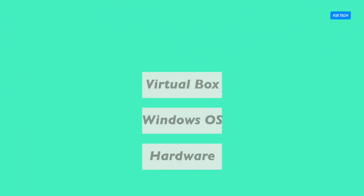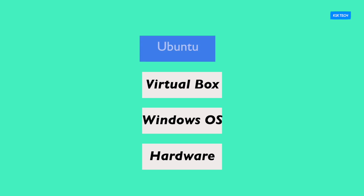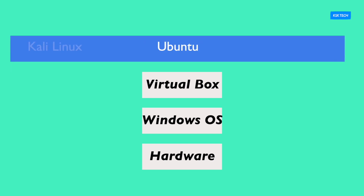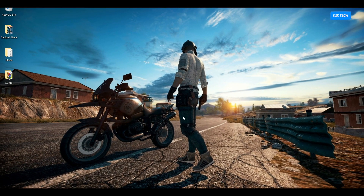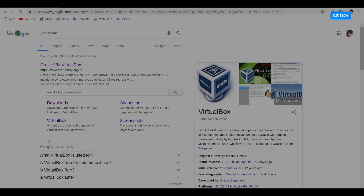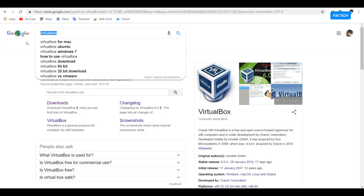This works seamlessly. You have a host or main OS, say Windows, and it provides a platform for VirtualBox to run. The VirtualBox uses virtualization technology that lets you run multiple operating systems. In this video, I will be using a Windows PC for demonstration purposes, and the process will be the same for both Windows and Mac OS users. Anyway, let's get into the installation part.